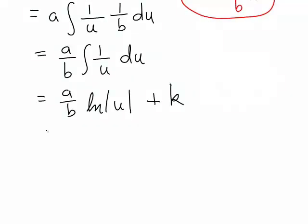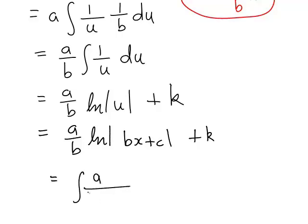And finally, remembering that u was equal to bx plus c, substituting that back in, we get a divided by b times the natural log of bx plus c plus a constant. So that is the integral of what we started with, a divided by bx plus c with respect to x.